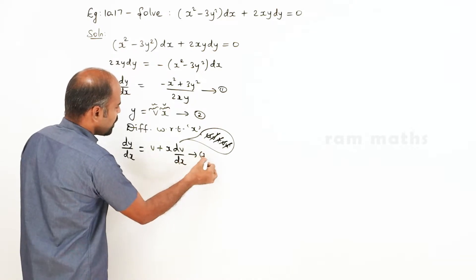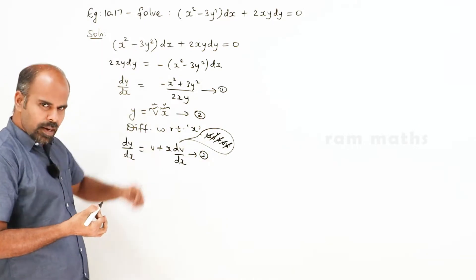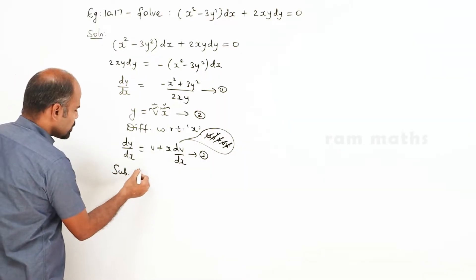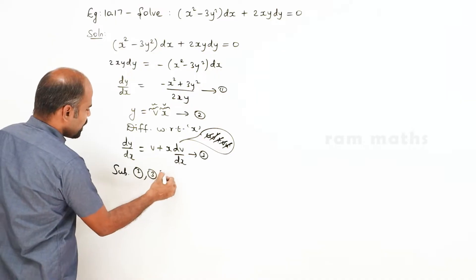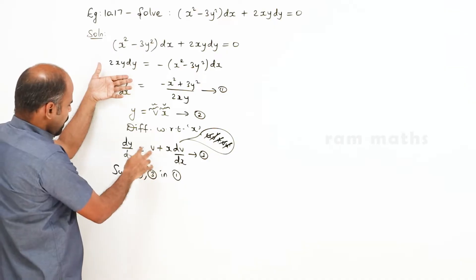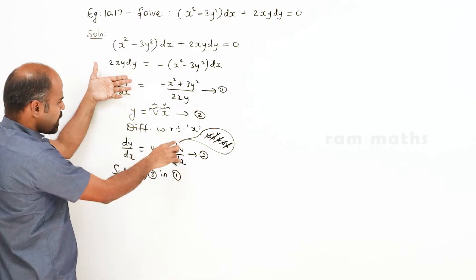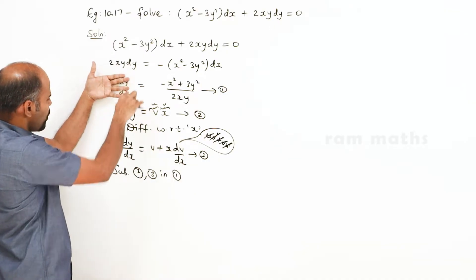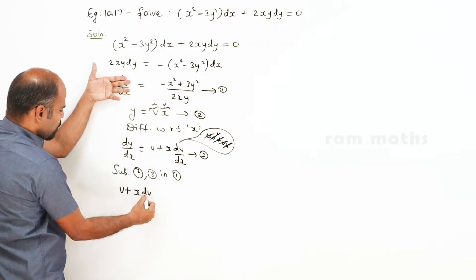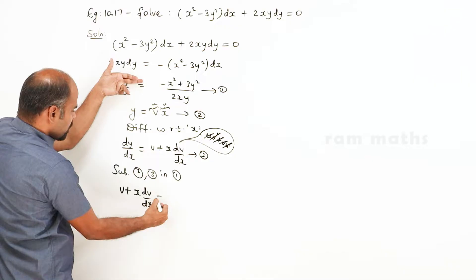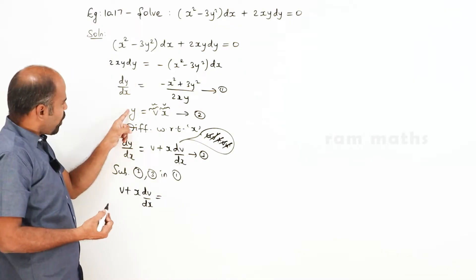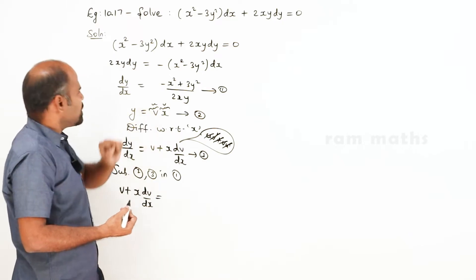Equations 2 and 3 are substituted into equation 1. So dy/dx equals v plus x dv/dx. Substituting dy/dx equal to v plus x dv/dx, and replacing y with vx on the right-hand side.